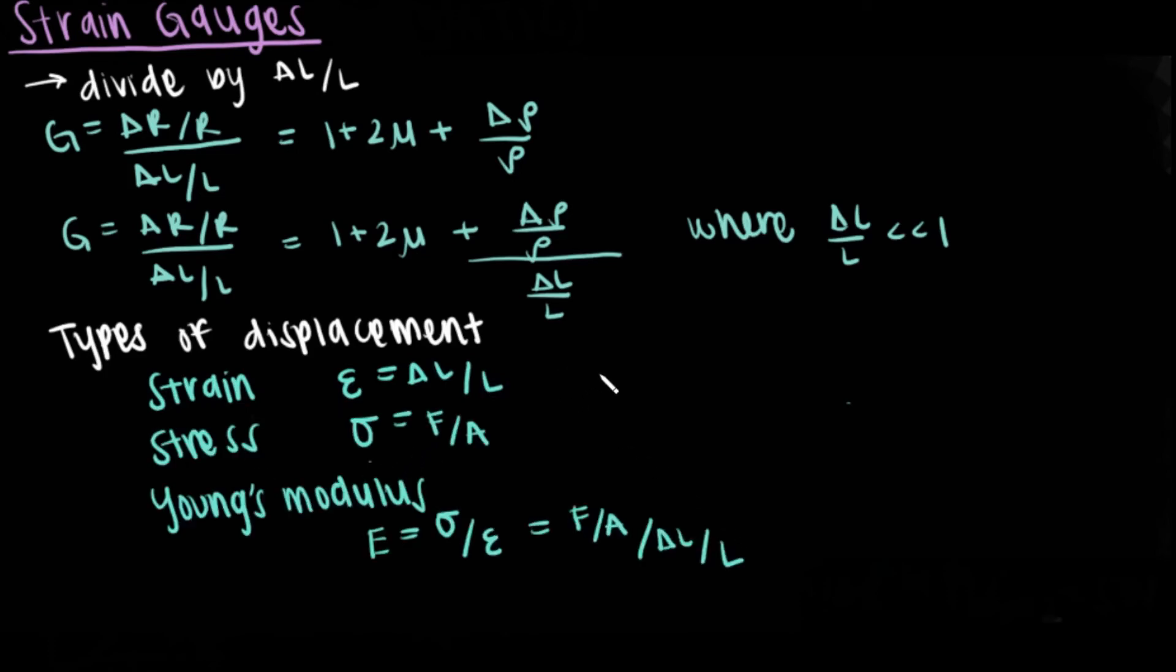Stress is another measurement of displacement. It is equal to force divided by area. From these two displacements, a material property known as Young's modulus can be determined. Young's modulus is equal to stress divided by strain.